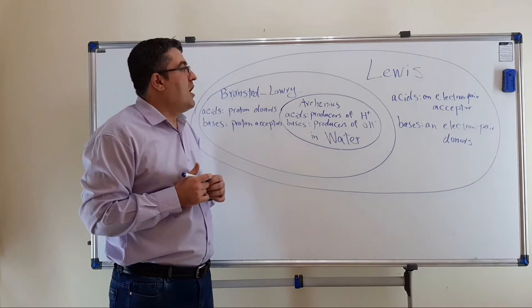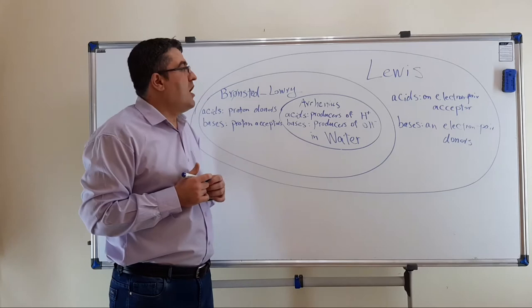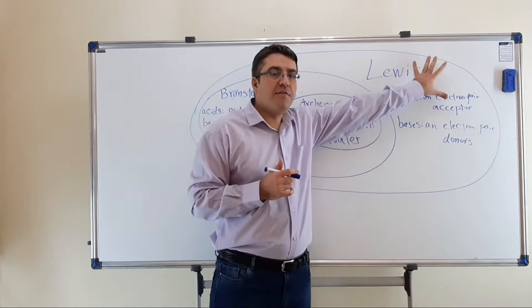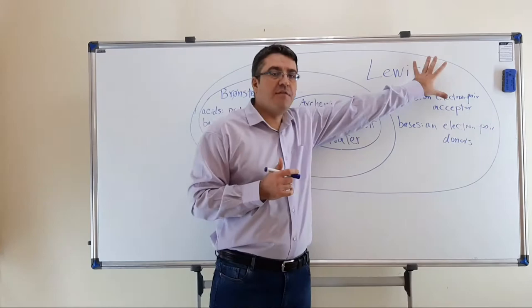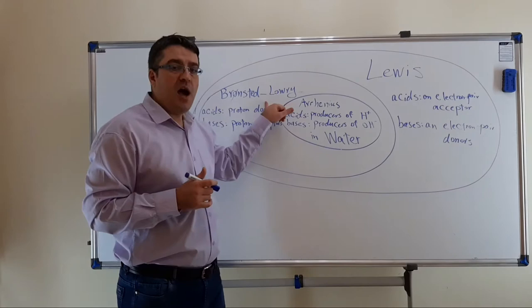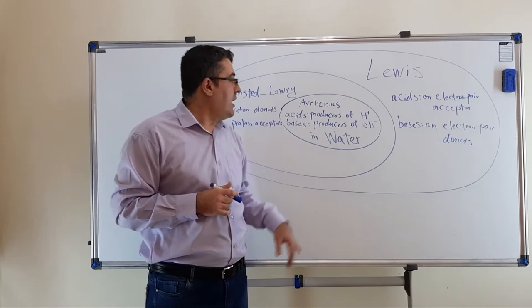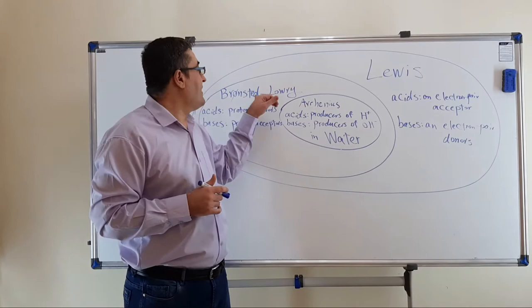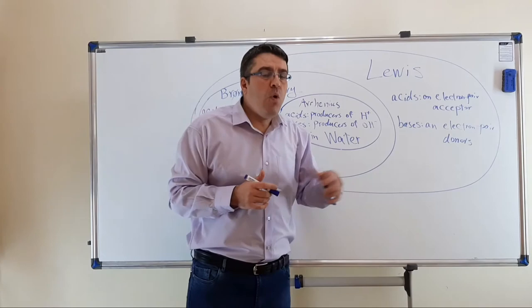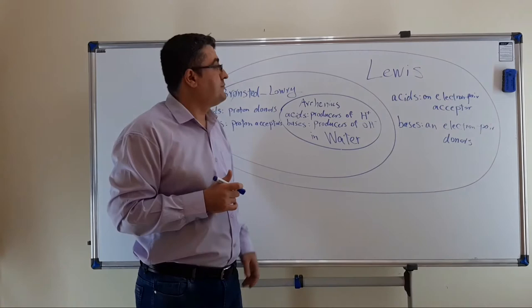Discussions like this show us why we can say that the Arrhenius acid-base theory is a subset of the Brønsted-Lowry acid-base theory, and the Brønsted-Lowry acid-base theory is a subset of the Lewis acid-base theory. In other words, Lewis acid-base theory is much more general than the Brønsted-Lowry acid-base theory, and the Brønsted-Lowry acid-base theory is much more general than the Arrhenius acid-base theory. Conversely, the Arrhenius acid-base theory is much more limited or specific than the Brønsted-Lowry theory, and this one is more limited than the Lewis one.